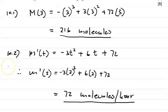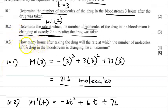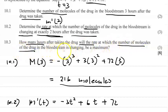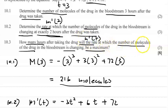10.3 says: how many hours after taking the drug will the rate at which the number of molecules of the drug in the bloodstream is changing be a maximum? The rate is m'(T). For the rate to be a maximum, you have to find the second derivative and equate it to zero.